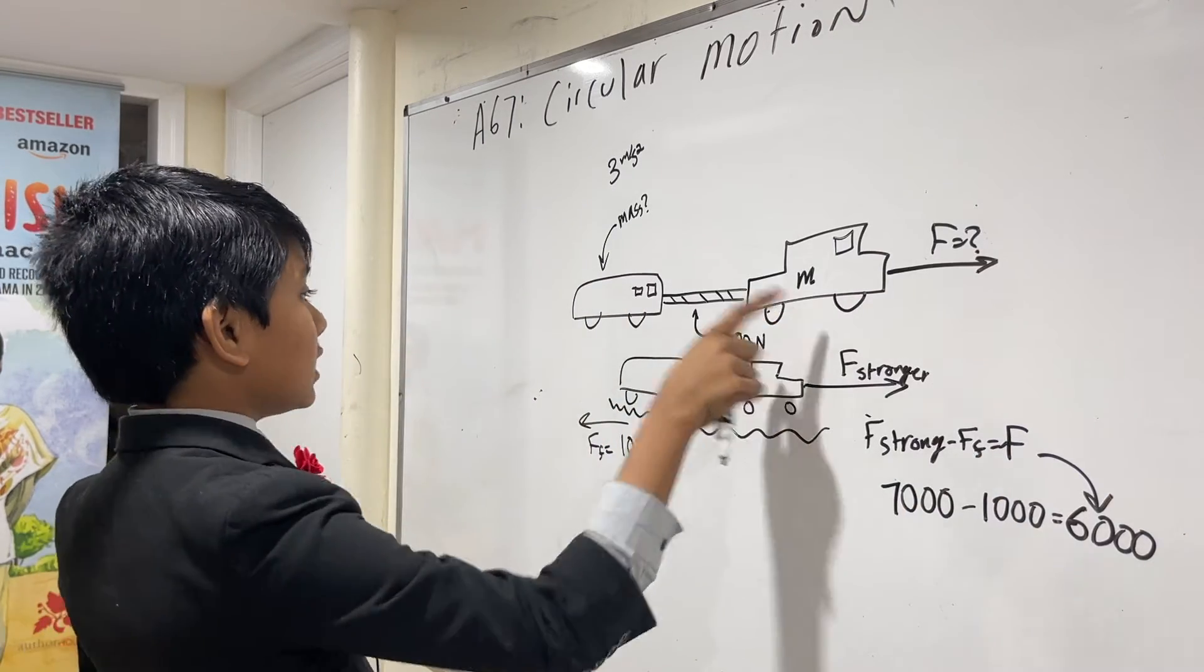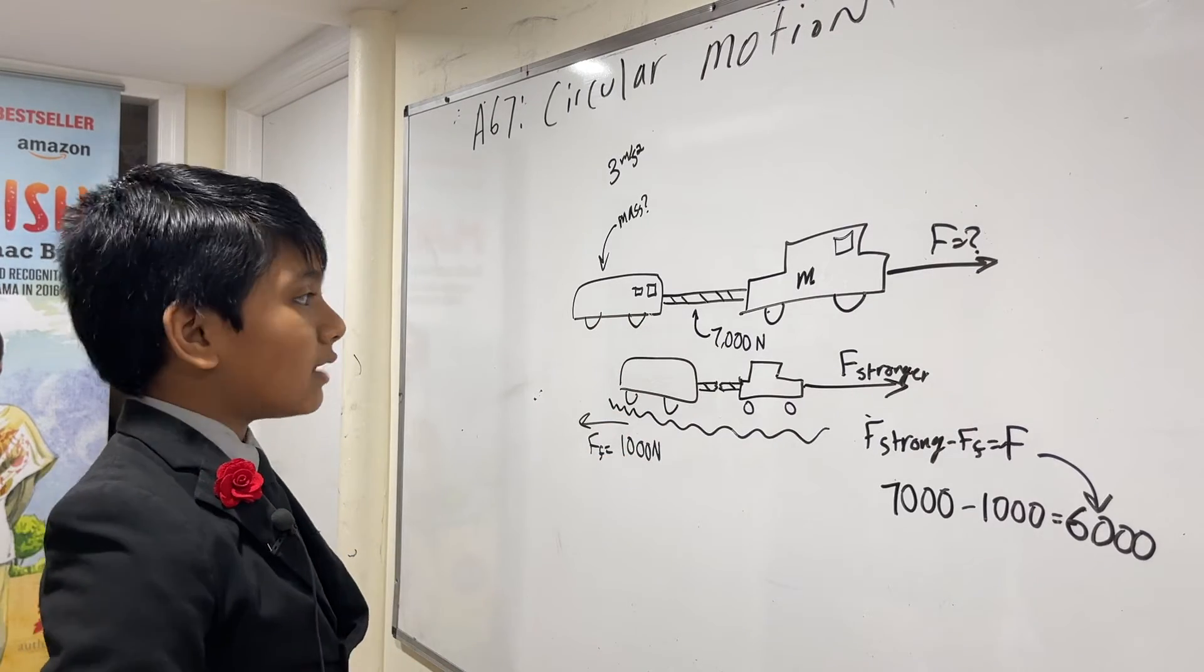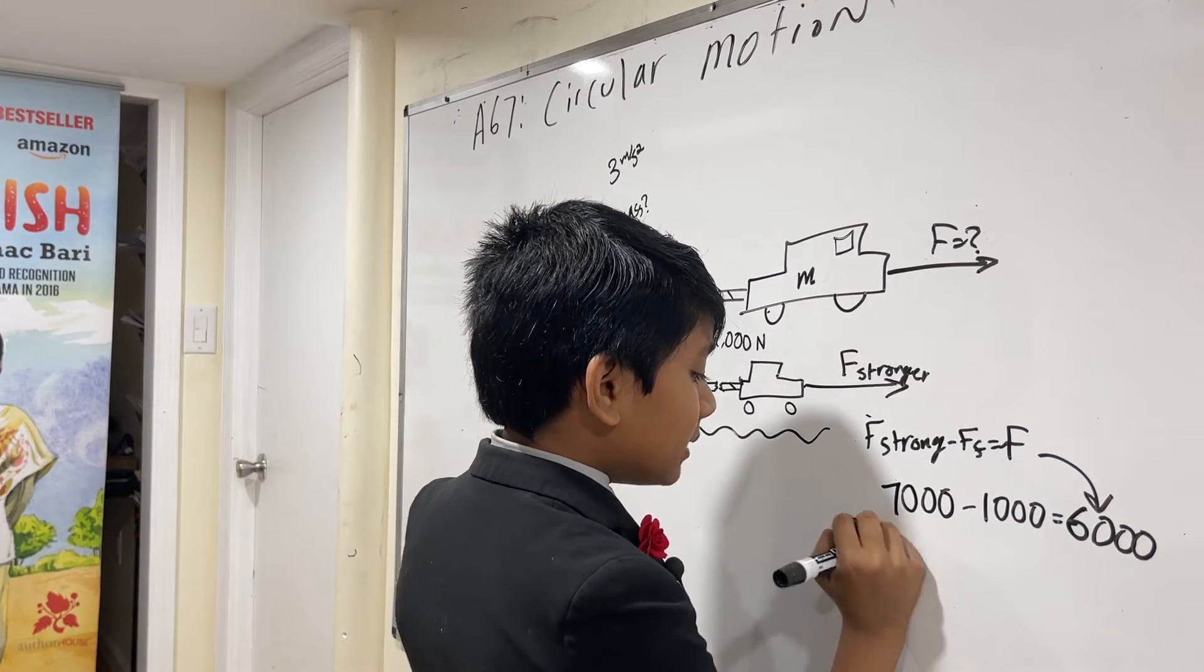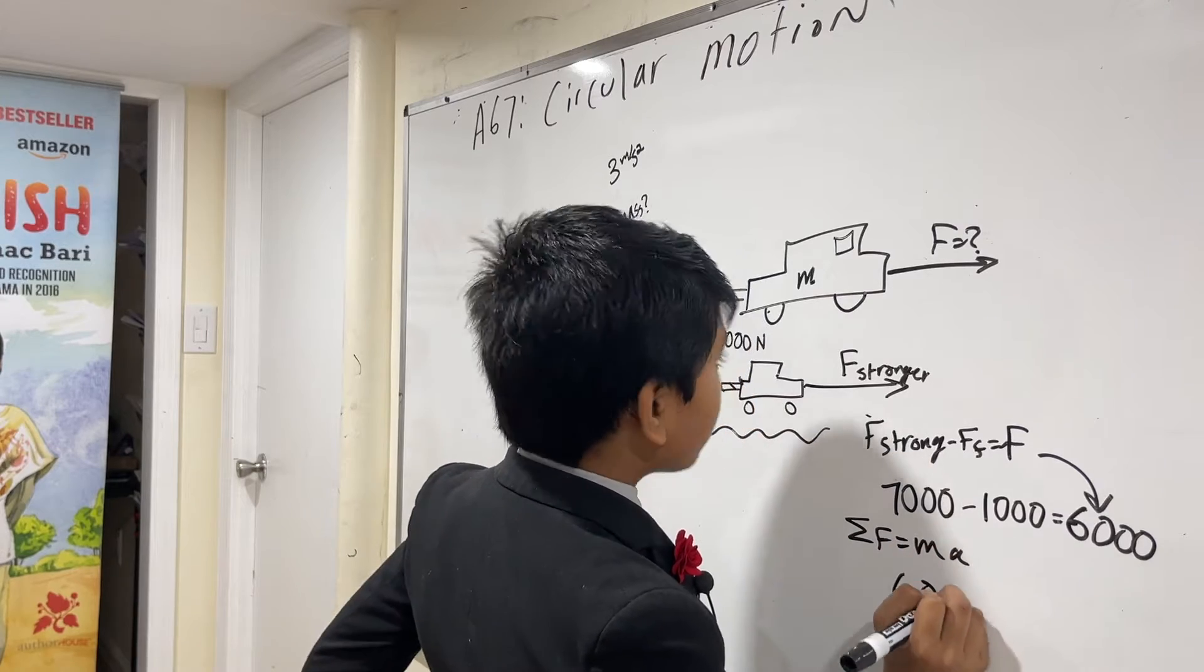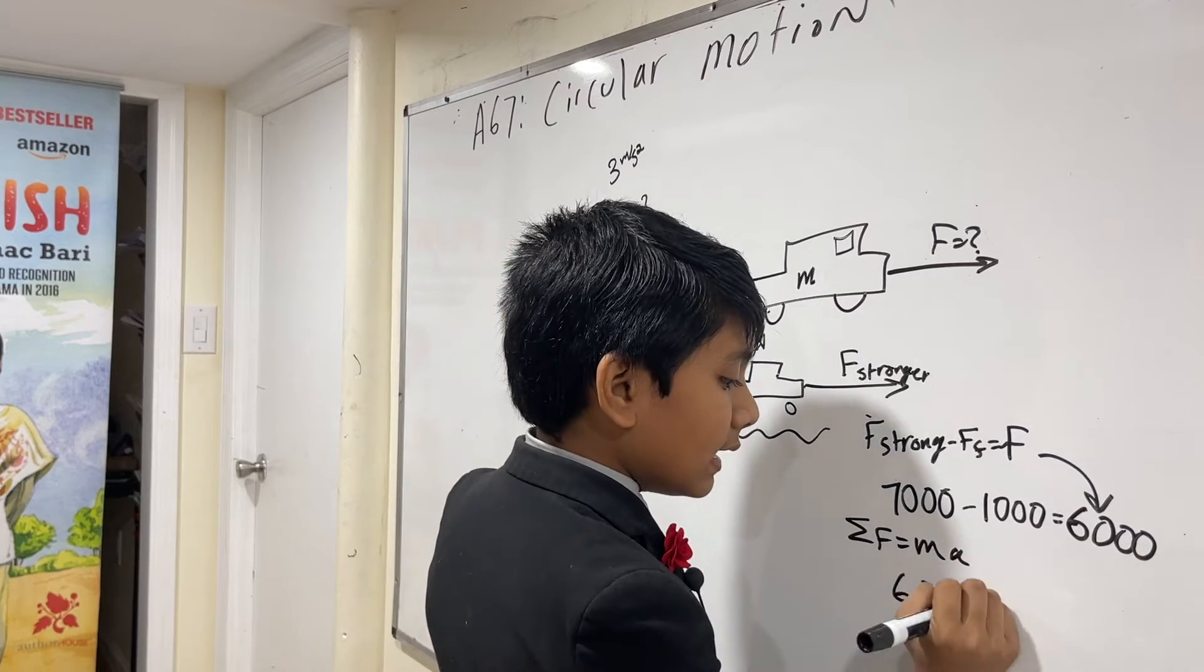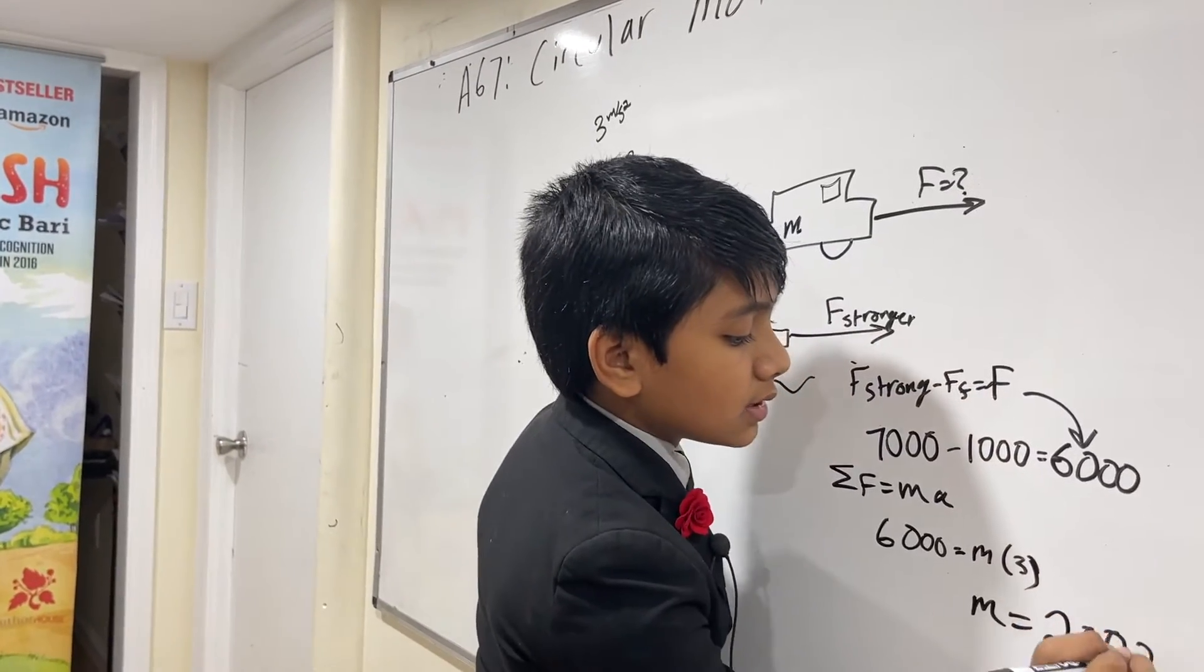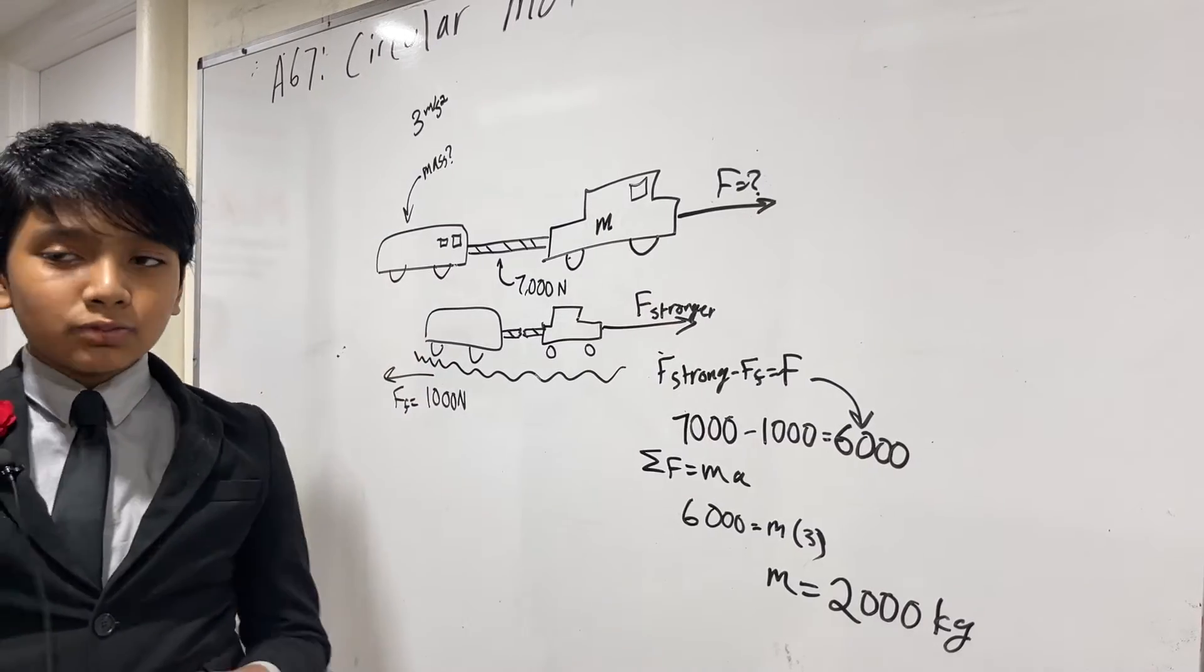And when this Tesla was pulling this trailer with a force of 6,000 newtons, this trailer was moving at 3 meters per second squared. So, that means we have sigma F equals MA. Sigma F is just 6,000 for this trailer because that's the only force, force of tension. It's equal to M times our acceleration is 3. So, our M is just 2,000 kilograms. That simple. Alright. Let's move on to the next problem.